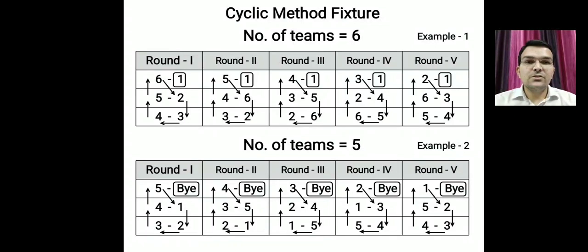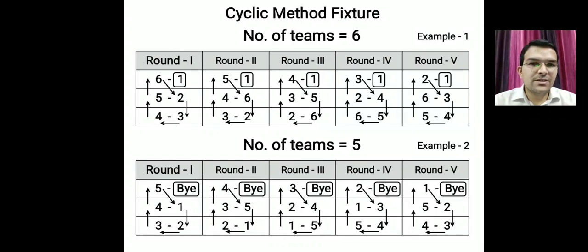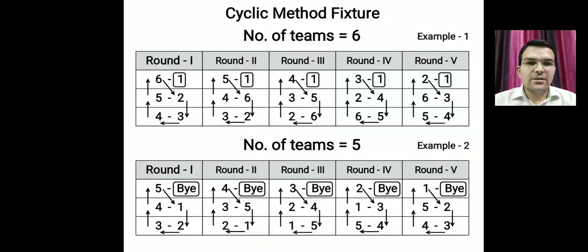This is the complete fixture for six and five teams. In the first round we started with team number two below team number one, and by the last round all teams have completed a whole cycle, returning to the starting positions. That is why we call it the cyclic method, and it is the most-used method because it gives us a round-by-round schedule of matches.